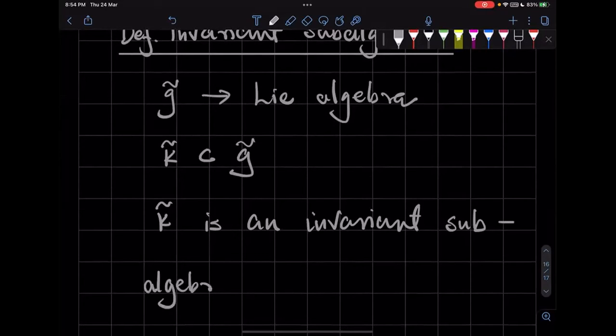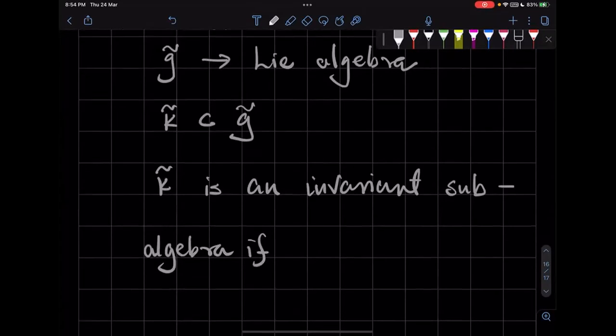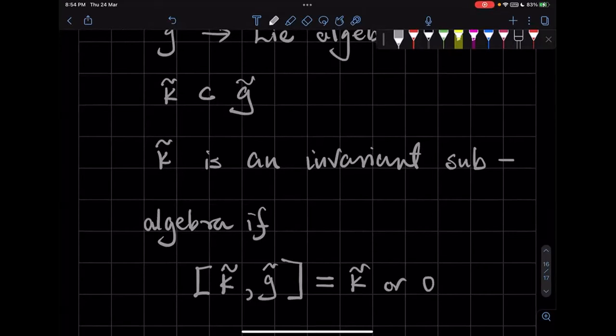Now K̃ is an invariant subalgebra if commutators of the elements of K̃ with the elements of G̃ either results in K̃ or zero.